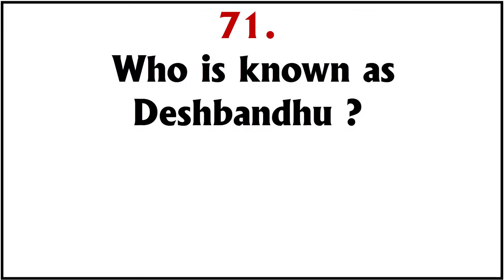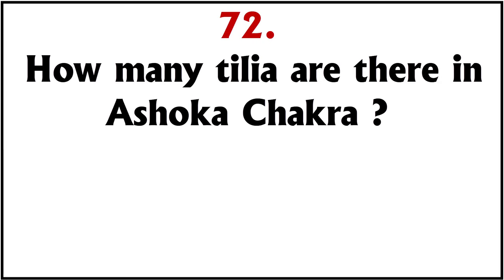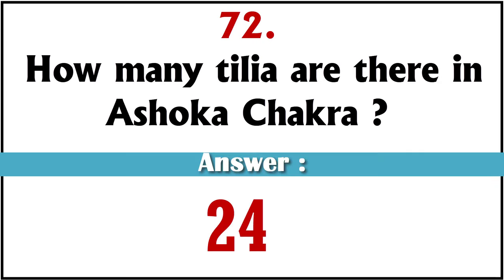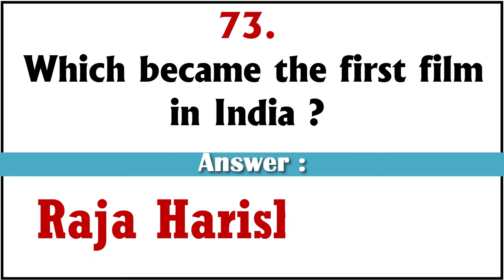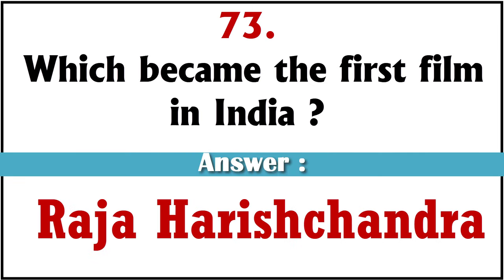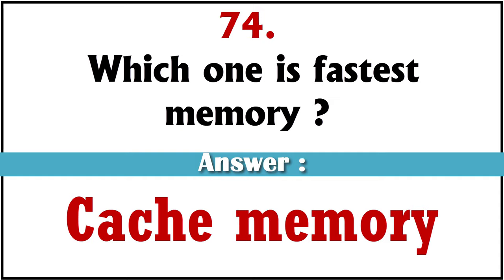Who is known as Desh Bandhu? Chittaranjan Das. How many spokes are there in the Ashok Chakra? Twenty-four. Which was the first film in India? Raja Harishchandra. Which one is the fastest memory? Cache memory.